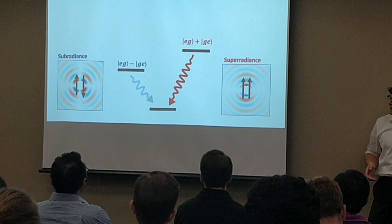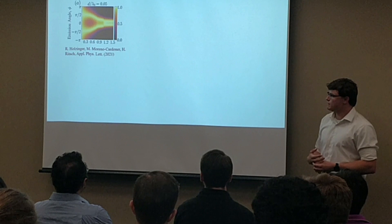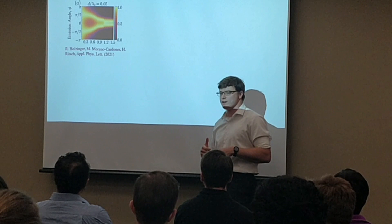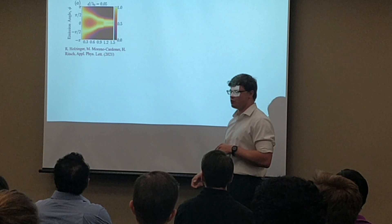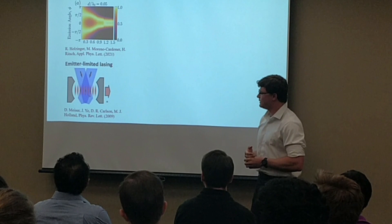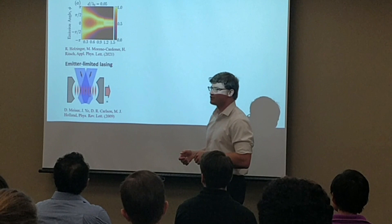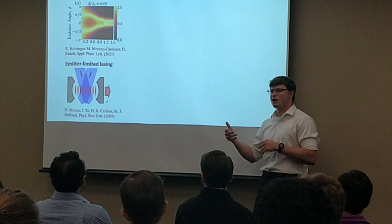In the realm of superradiance, if you have certain geometries of collectively interacting dipoles, the superradiant emission can be highly directional, so rather than emitting in every direction, you can make it preferentially decay into a guided mode. There are also proposals to make a laser dominated not by cavity interactions, but by collective interactions between emitters, which could result in a laser whose linewidth is limited by the emitters themselves — leading to a millihertz linewidth laser, which would be great for quantum clocks.